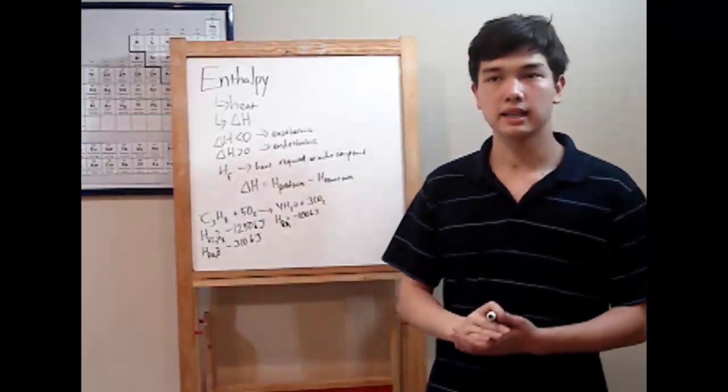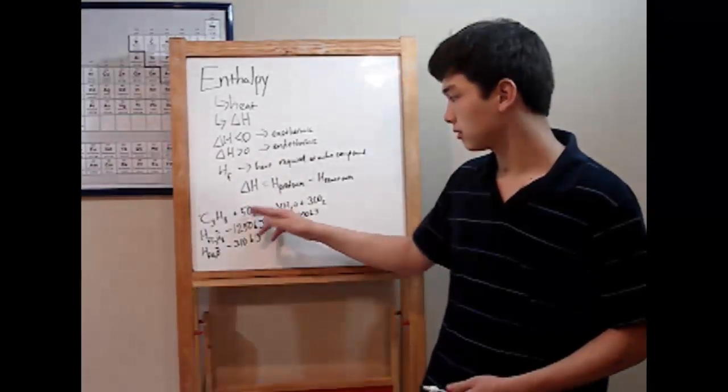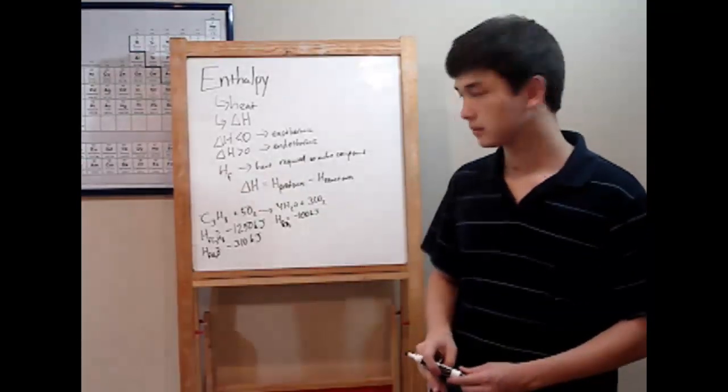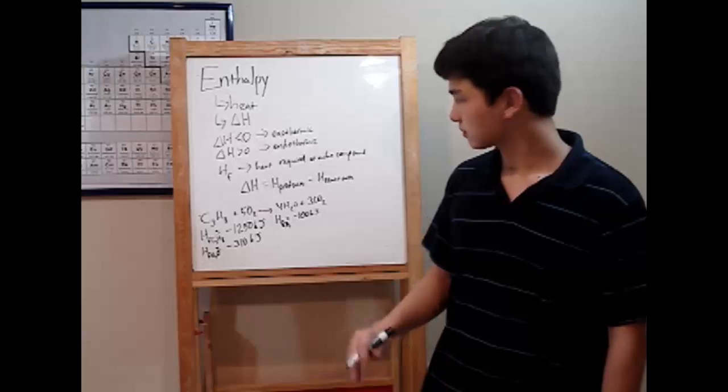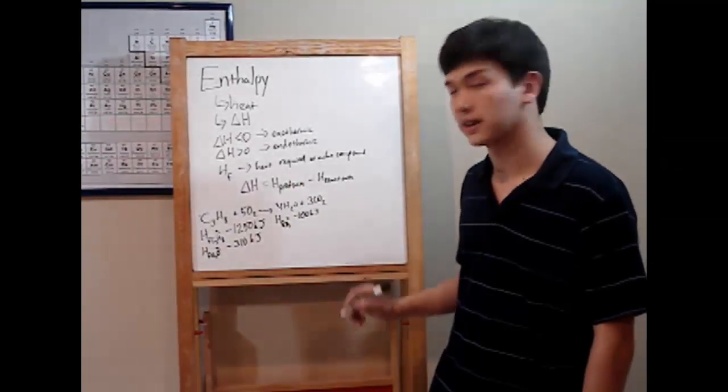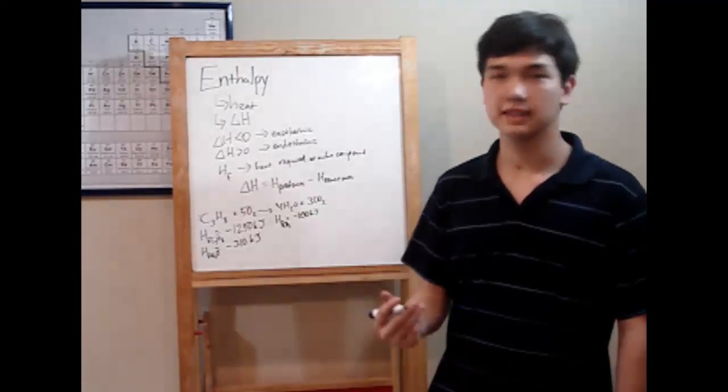You'll notice that I didn't give a heat of formation for oxygen. That's because it's an element. Any element has a heat of formation of zero. So you don't need to worry about that. So we need to find the heat of formation of the products. How do you do that? Just add it together.